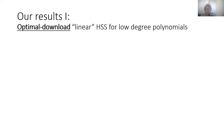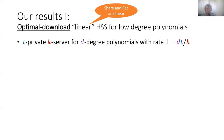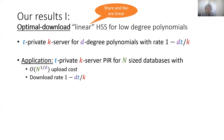Moving on to our results: in the first part, we show a construction for an optimal download linear HSS for low-degree polynomials. Optimal download means we have both a positive and negative result, and linear HSS means both the sharing and reconstruction algorithms are linear functions. We show that for T-private K-server HSS for degree-d polynomials, the best possible rate is 1 minus dT over K. As an application, we construct a T-private K-server PIR protocol for N-size databases such that the upload cost is N to the one over d, and the download rate is 1 minus dT over K.